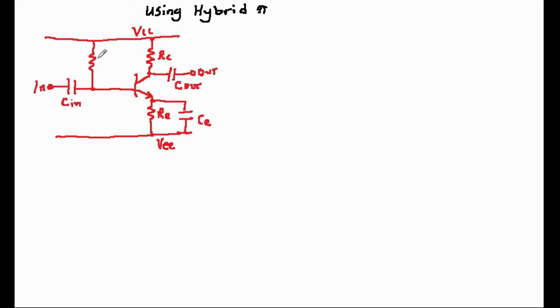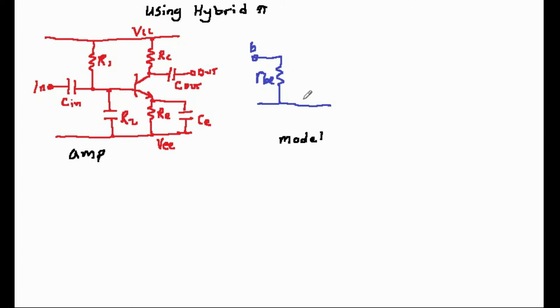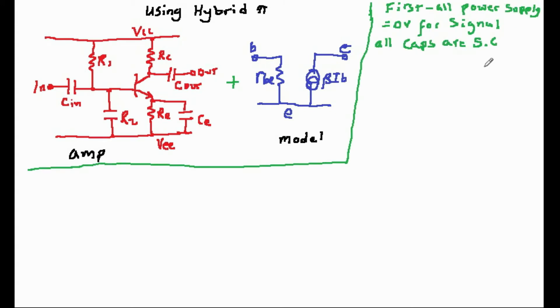First of all, let's make two theoretical simplifications which we've discussed in several other videos already and which we often make before using a model. At signal frequencies, the capacitors look like short circuits. And secondly, both the supply lines look like ground.